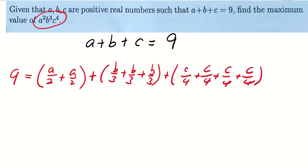We write this A, B, C in this form so that we can use AM-GM inequality. Now there are altogether 9 terms using AM-GM inequality.